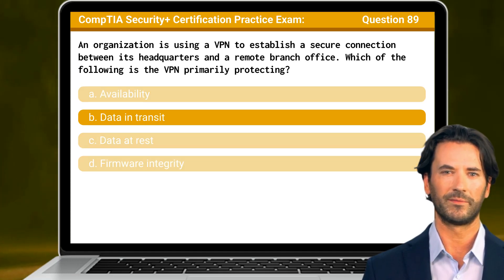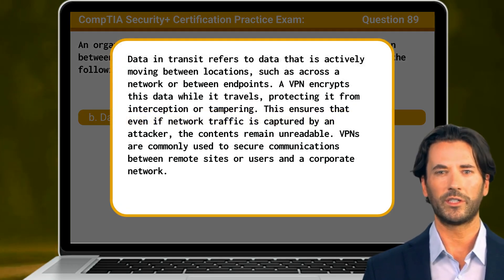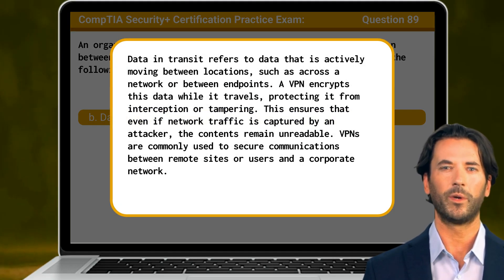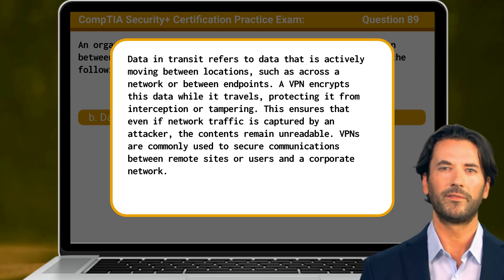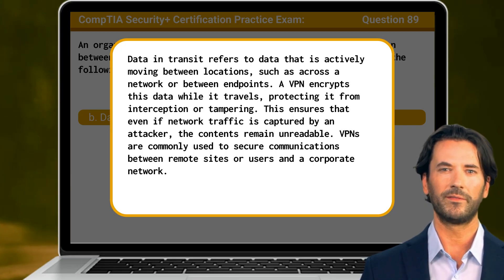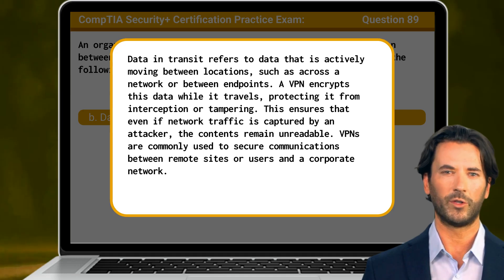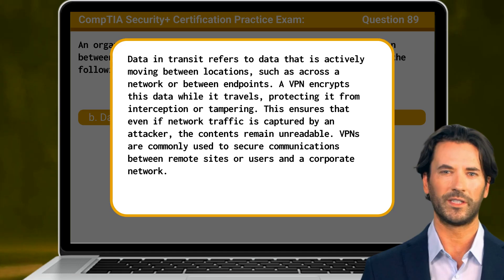The answer is B. Data in transit. Data in transit refers to data that is actively moving between locations, such as across a network or between endpoints. A VPN encrypts this data while it travels, protecting it from interception or tampering. This ensures that even if network traffic is captured by an attacker, the contents remain unreadable. VPNs are commonly used to secure communications between remote sites or users and a corporate network.